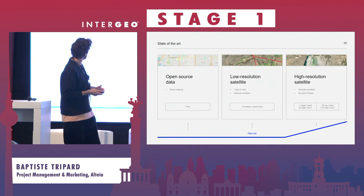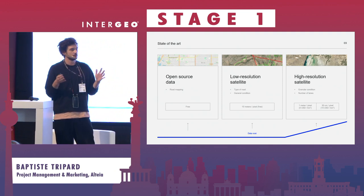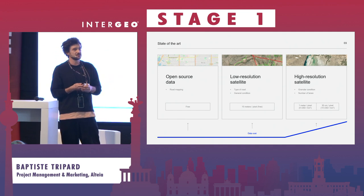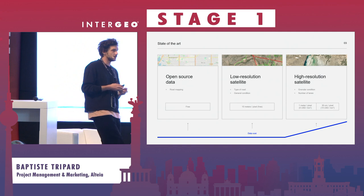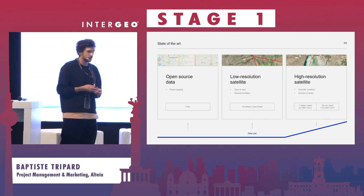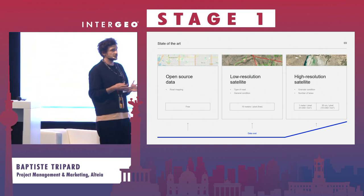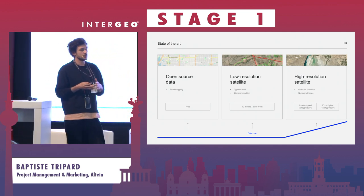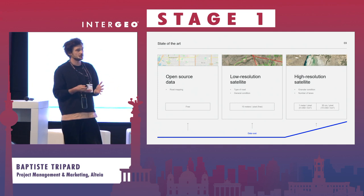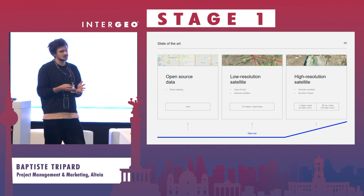We worked together thinking of a method that would give the right amount of information while minimizing the data cost. The state-of-the-art for geospatial data analysis at scale — whether for infrastructure projects or any type of business topic — includes available open source data coming from many different databases. OpenStreetMap is one of them, and that kind of open source data gives you a first scope of information, in our case the mapping of the road network for the developing countries we work on.